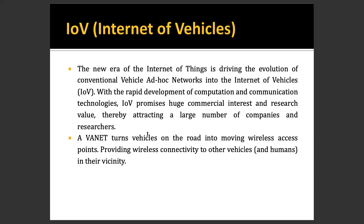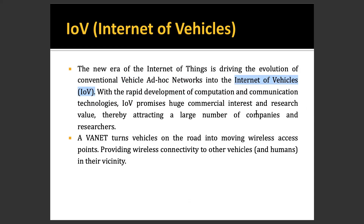The new era of Internet of Things is driving the evolution of vehicular area network (V-Net) into the Internet of Vehicles. Previously we had V-Net, which provides connectivity of vehicles locally. Now we are talking about global connectivity, and it is possible with IoV. With the rapid development of computing and communication technology, IoV promises huge commercial interest and research value.